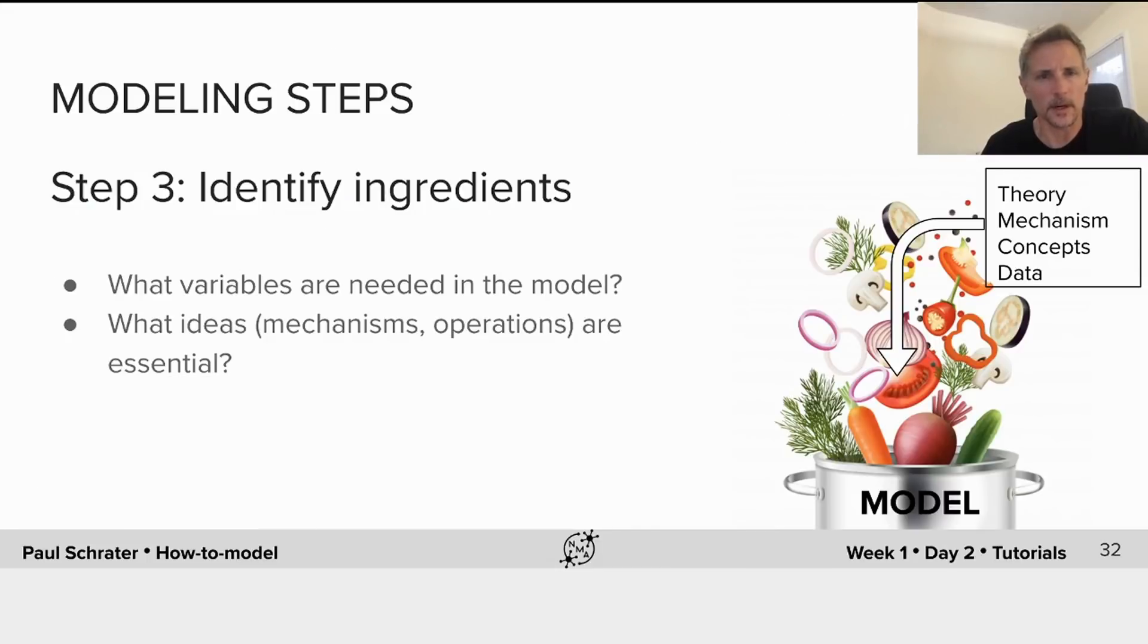The third step in our modeling is to identify the ingredients. One of the easiest ways to think about this is to pull together variables that we think will be needed. These variables will always be the inputs to our model, the outputs which are usually the data that we want to explain—here these are the perceptual judgments that people are making—but we also pull together the ideas which will link these two and develop an explanation for how the inputs are converted into outputs.